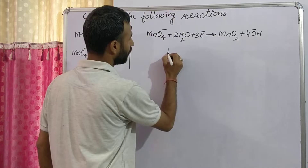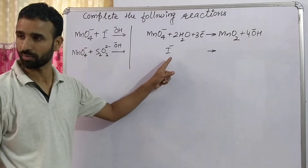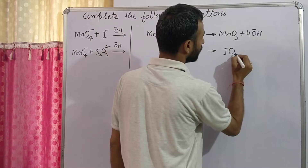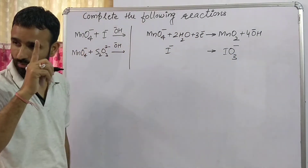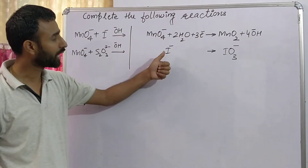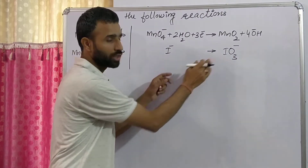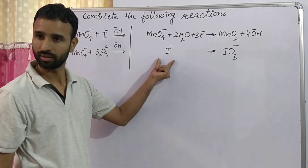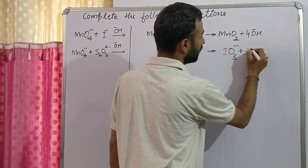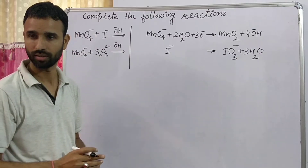Now, for I⁻: in acidic medium, I⁻ is converted into I₂. But in basic or neutral medium, I⁻ is converted into IO₃⁻. Keep in mind — in acidic medium I⁻ gives I₂, but in basic or neutral medium I⁻ gives IO₃⁻. So now there are three oxygens on this side and zero on the other, meaning this side has excess of oxygen.